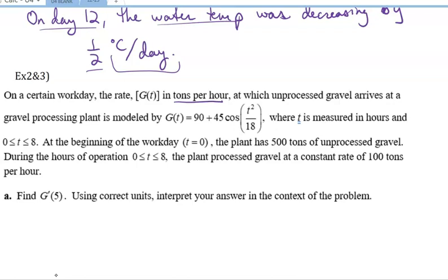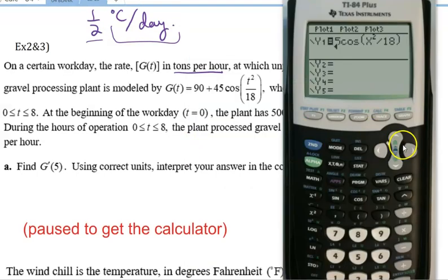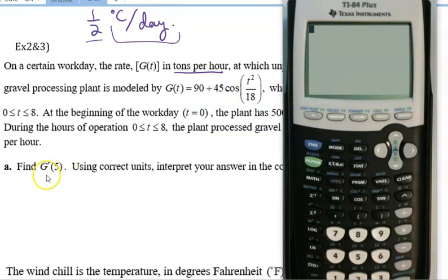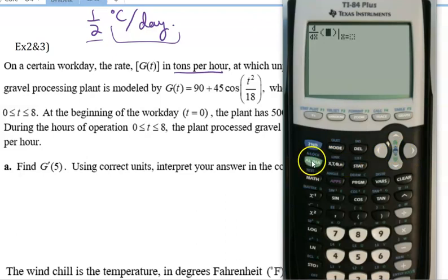So we're looking for G prime of 5. So G prime of 5 is going to be a rate of change of a rate. So keep that in mind, and we're going to pay attention to units to make sure our answer units are correct. And so we want to find the derivative of G at 5. So I've got this function into my Y1, and then I'm looking for the derivative at time 5. So remember, that's math 8, and I put my function in in terms of X, so derivative with respect to X. Alpha trace is my shortcut.